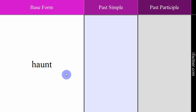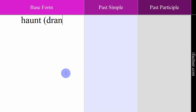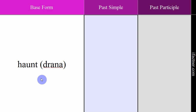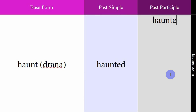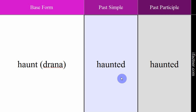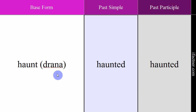The next verb is 'haunt', meaning darana — to haunt or frighten someone. Example: 'This house haunts me.' — Yeh ghar mujhe darata hai. Past simple form: haunted. Past participle form: haunted. Past simple: 'That house haunted me.' — Woh ghar mujhe darata tha, yaani ke usmein mujhe dar lagta tha. Past participle: 'This movie has haunted me.' — Isnein mujhe daraaya hai. Verb: haunt. Meaning: darana. Past simple: haunted. Past participle: haunted.